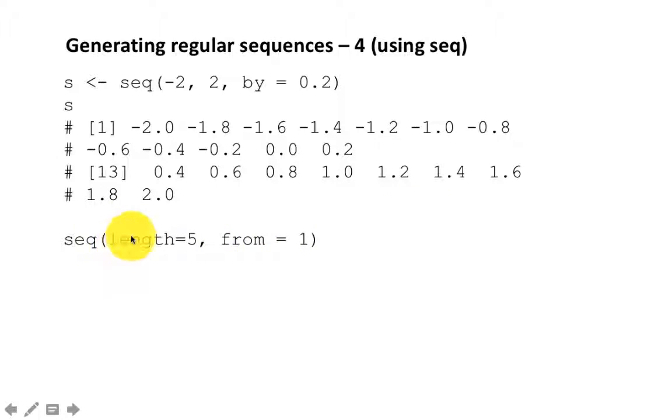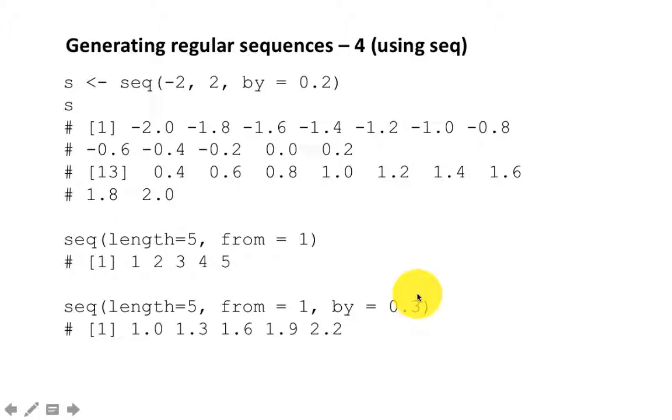Here we are using it in a different way. We are saying generate for me a sequence of length 5, start from 1. We didn't say where to end because we said generate 5 values. We also didn't specify the incrementing value, which means it's going to go by 1. So it will do 1, 2, 3, 4, 5. If you specify from and length, then obviously you should not specify to. You can do by=0.3. Here by was by default 1. And you're going to get these results. So there are many different ways in which you can generate these sequences.